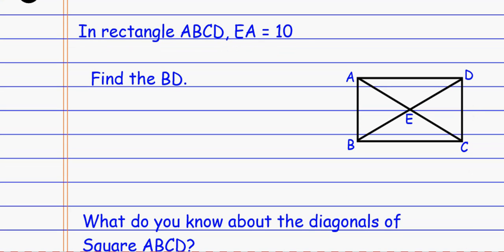In this next example, rectangle ABCD has AE equal to 10, and I want to find BD. AE is just this little piece, which is 10. Thinking about the diagonals of a parallelogram, they bisect each other, so if AE is 10, then EC is also 10. That means the entire diagonal AC — using segment addition, adding the two pieces together — gives the whole segment, so AC equals 20.